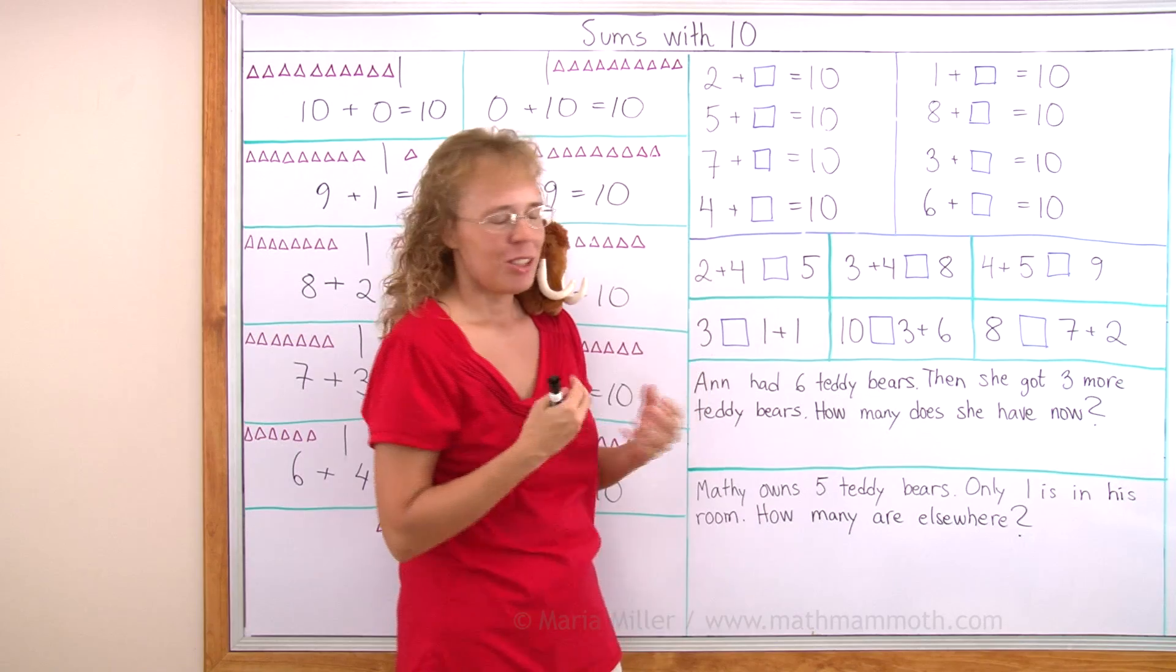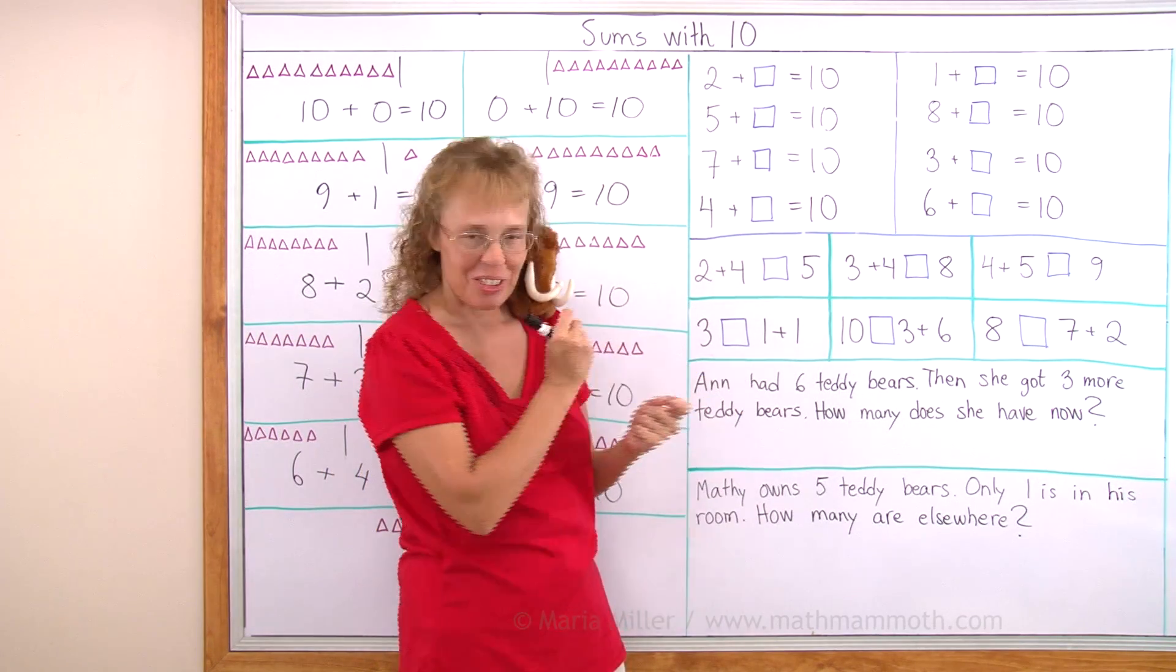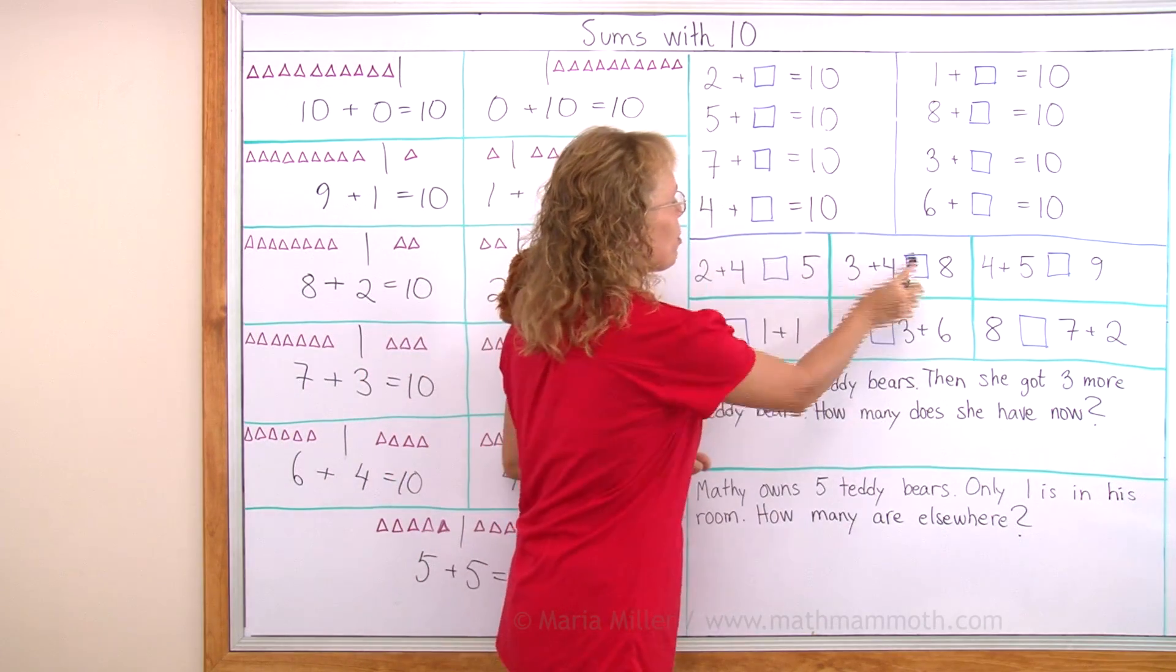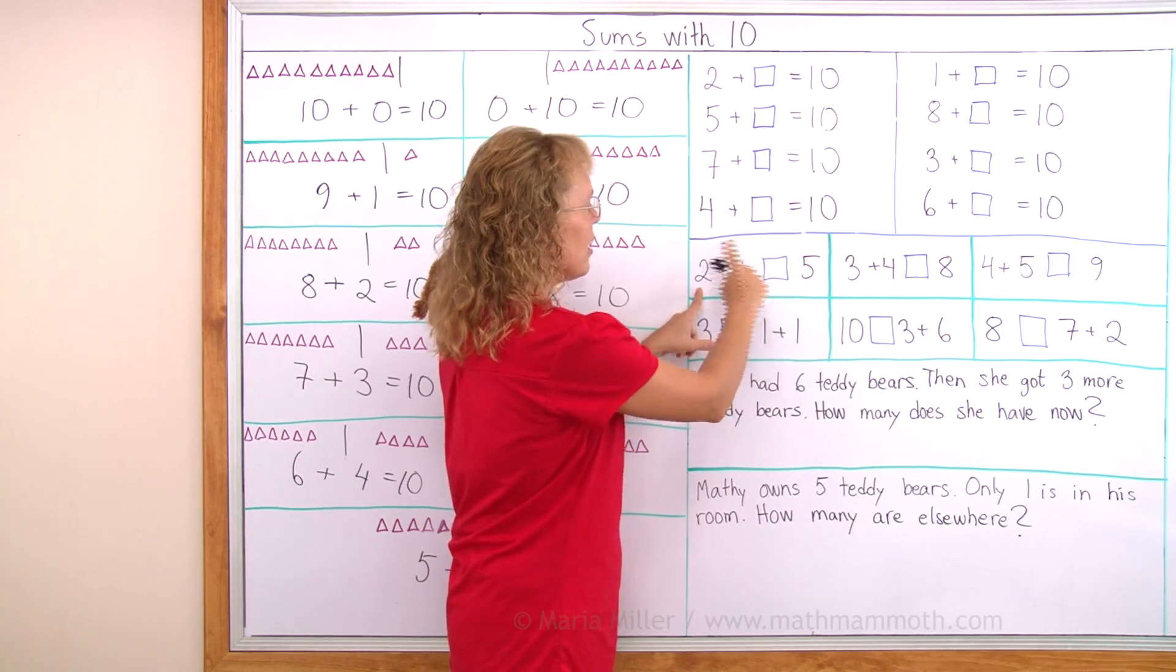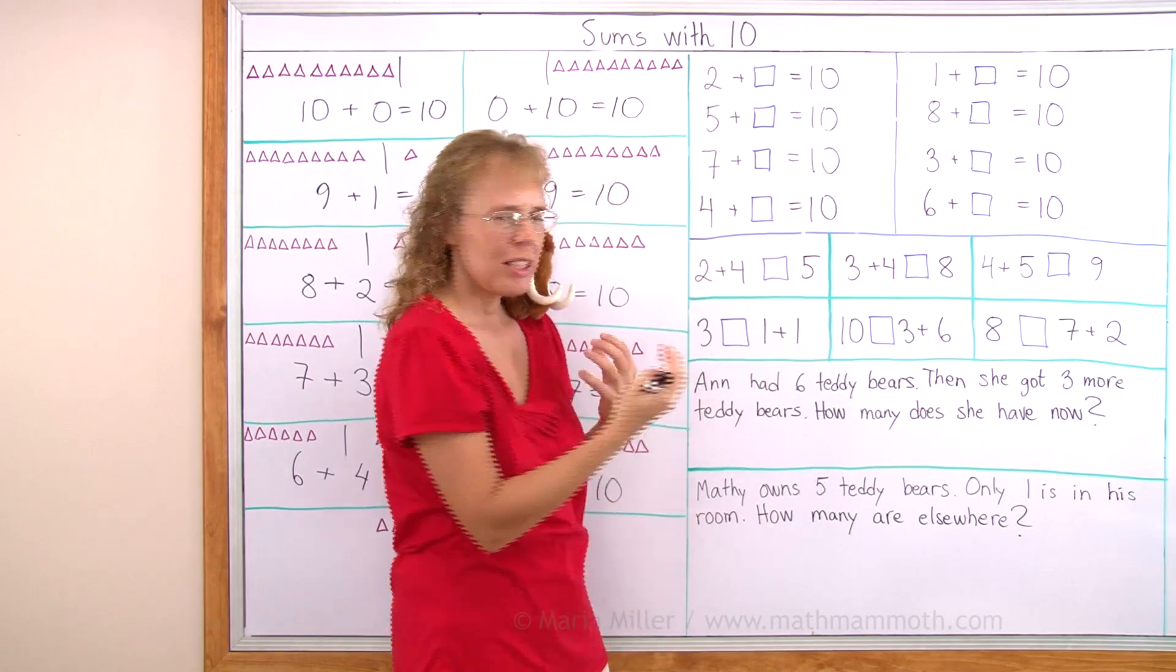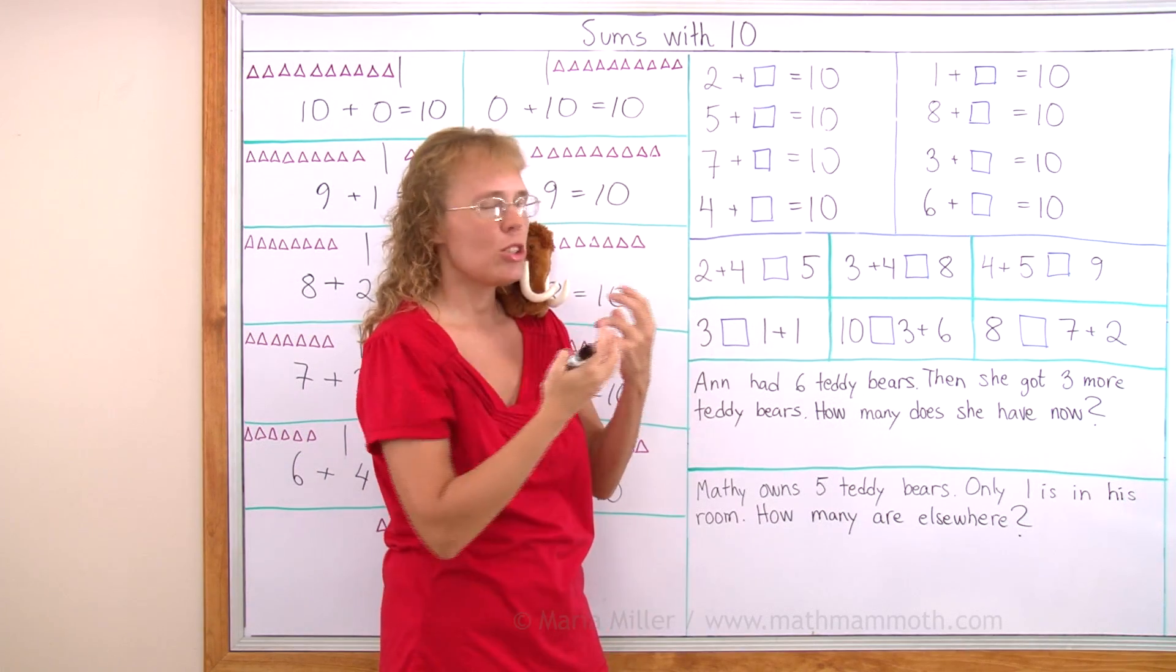Here we are doing comparisons. We are writing either less than or greater than or equal sign in these blue boxes. So here we have 2 plus 4 on this side and 5 on the other side. Which one is more? Now 2 plus 4. We need to solve that. How much is 2 plus 4?